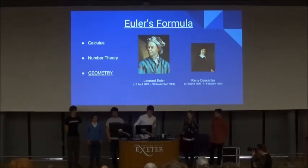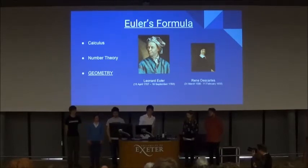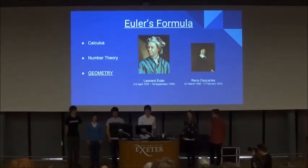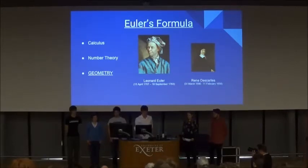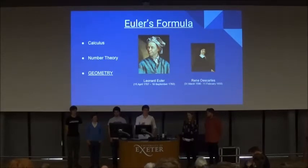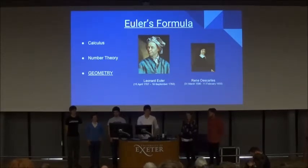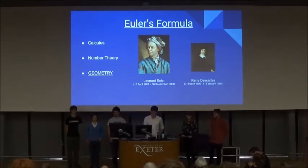Euler was a Swiss mathematician in the 18th century, and he developed many areas of maths, including calculus, number theory, and more importantly, geometry. The relationship between the number of vertices, faces, and edges was initially written down by Descartes in the 17th century; however, it was refined to this formula by Euler, so it's accredited to him.